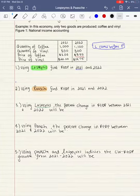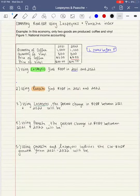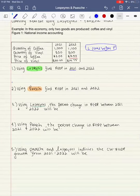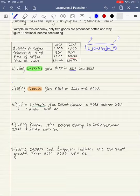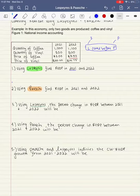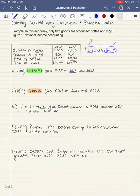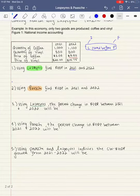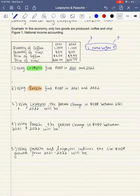All right. So first, using Laspeyres, find real GDP in 2021 and 2022. So remember that L comes before P. So L must be initial prices and P must be final prices. So let's go ahead and do this. So Laspeyres in 2021, we use initial prices. So it's very similar to calculating nominal GDP.